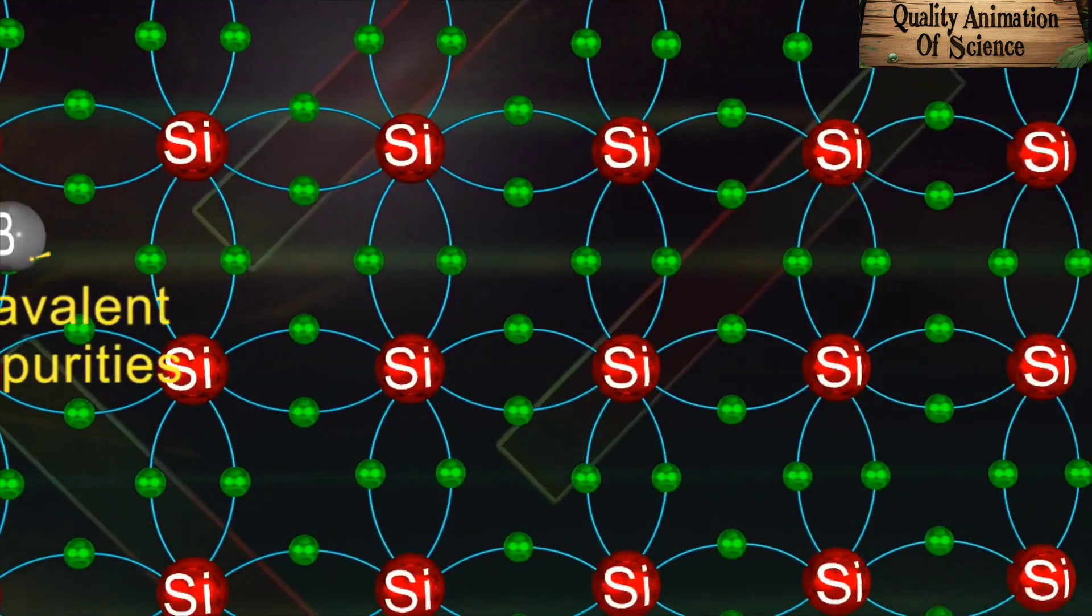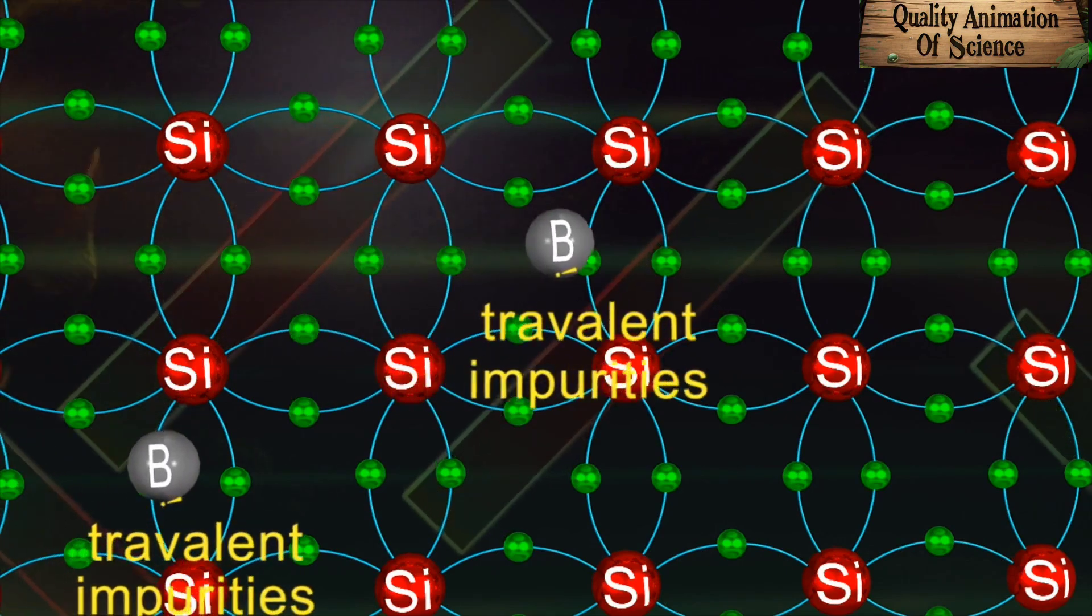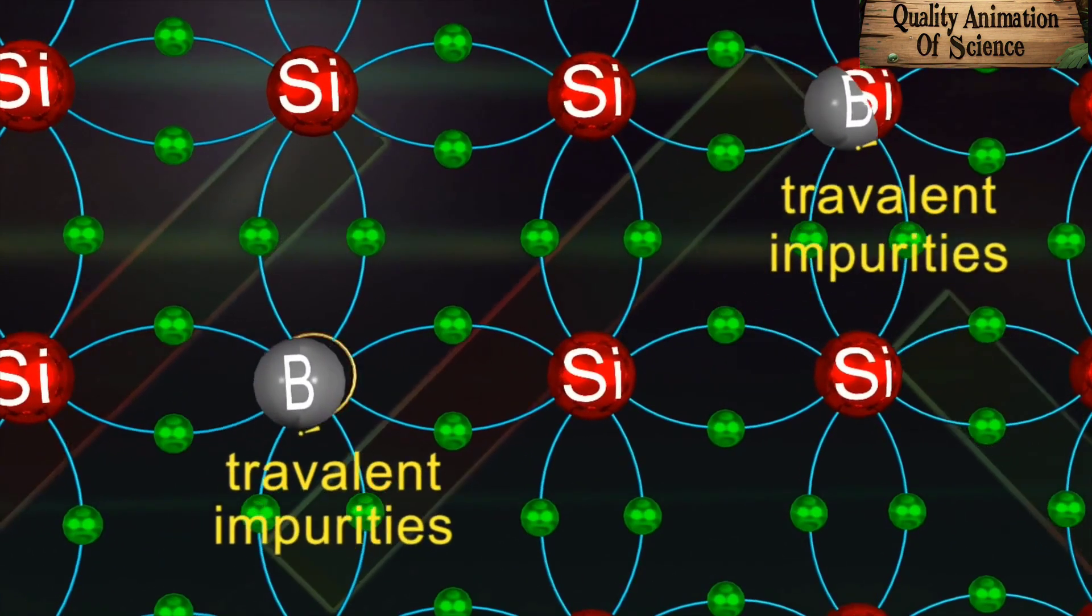Similarly, trivalent impurities can also be added to the tetravalent silicon to replace some of their atoms.